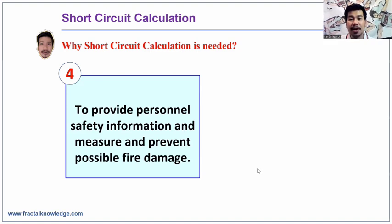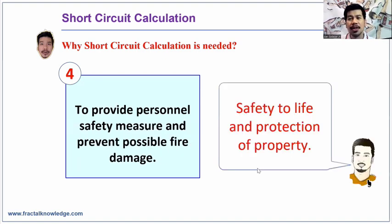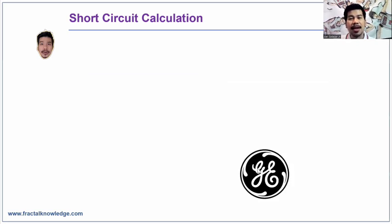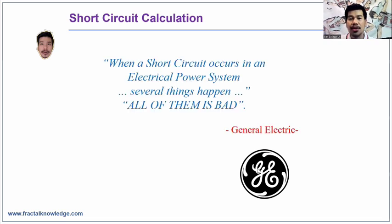The fourth reason is to provide personnel safety data and values so that during your preventive maintenance and monitoring, you can prevent possible fire damage attributed to underrated protection. The bottom line why we compute short circuit boils down to safety to life and protection of property for those who use electricity, which is under the responsibility and expertise of future engineers like you and me. Last, GE wrote in one of their white papers for fault calculation. GE emphasizes that when short circuit occurs in electric power system, several things happen, all of them is bad. Therefore, the need for short circuit calculation is important. You have no reason not to compute it.